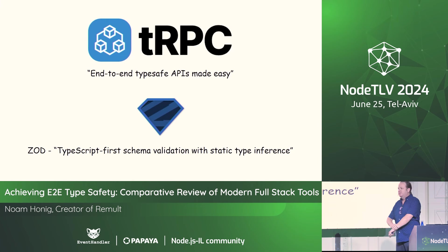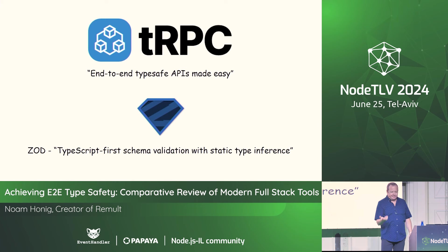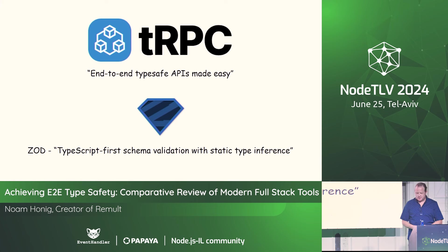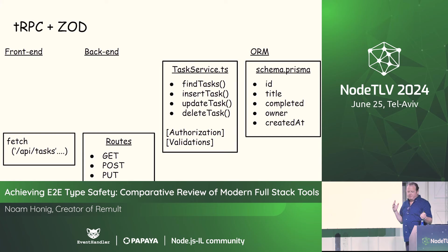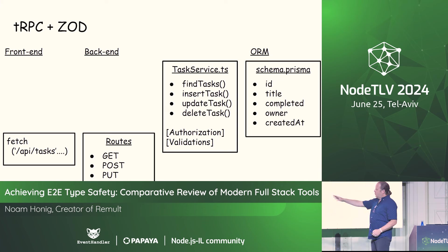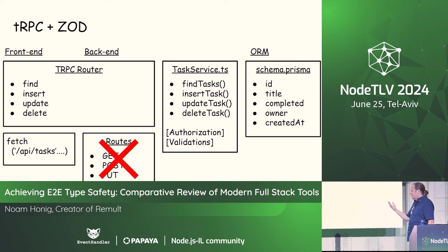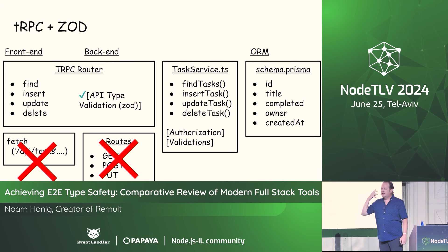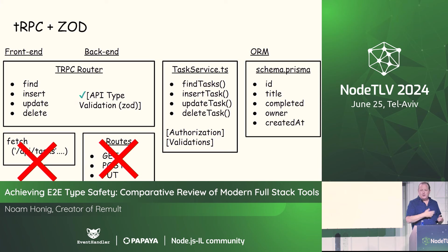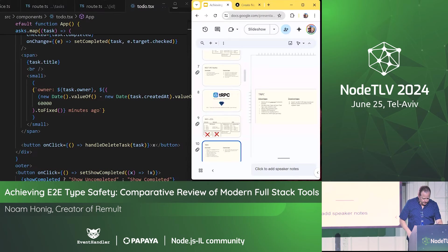The next step in our journey is tRPC — end-to-end type-safe APIs made easy. A guy named Alex created it a few years ago with the goal of making RPC (remote procedural calls) easier. It uses a lot of Zod. When we look at where tRPC fits in our stack: we take away the routes, take away the fetch, and replace it with a task router from tRPC. That router replaces the routes and fetch, and even adds a layer of API type validation, which is extremely useful.